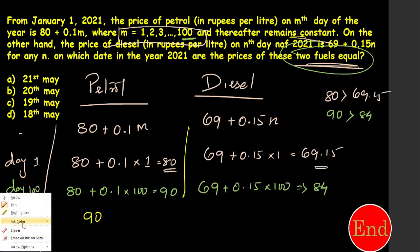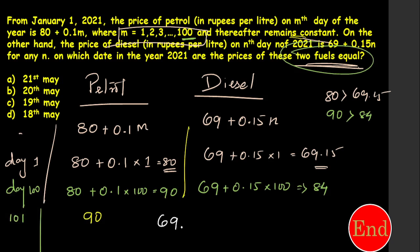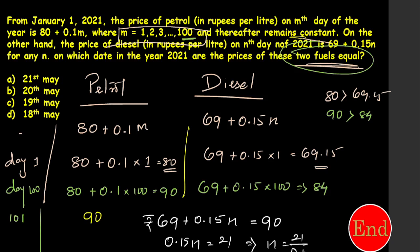So I only need to check diesel after Day 100. I form the equation: diesel rate equals 69 plus 0.15N equals 90. Solving: 0.15N equals 21 (which is 90 minus 69), so N equals 21 divided by 0.15, which is 140. At Day 140, diesel reaches 90 and both fuels are equal.